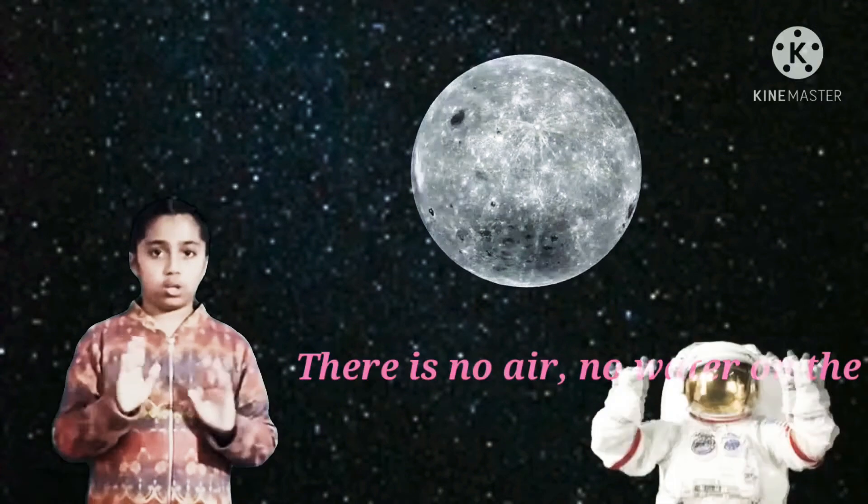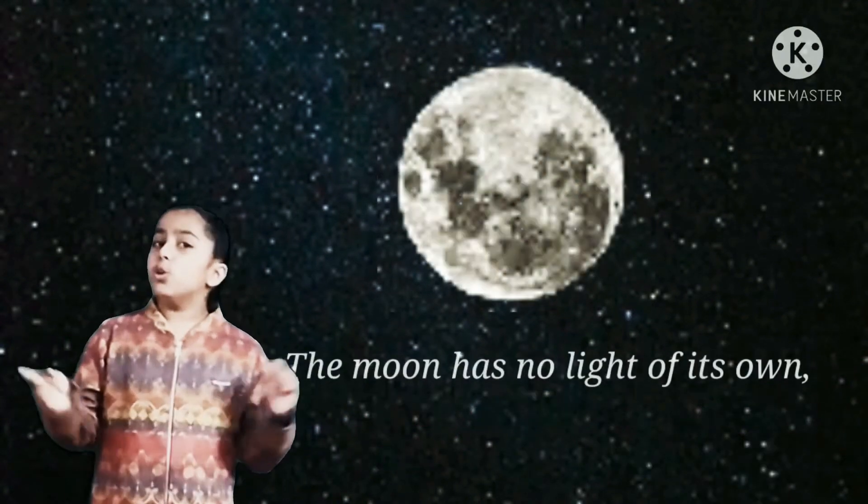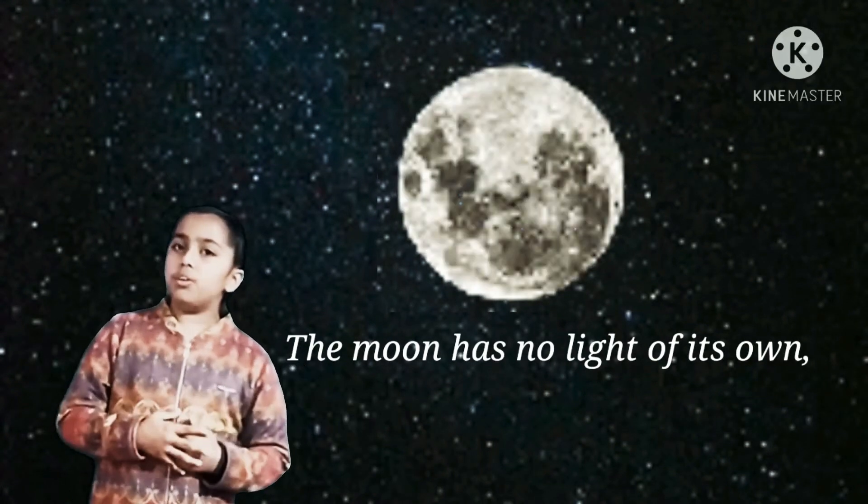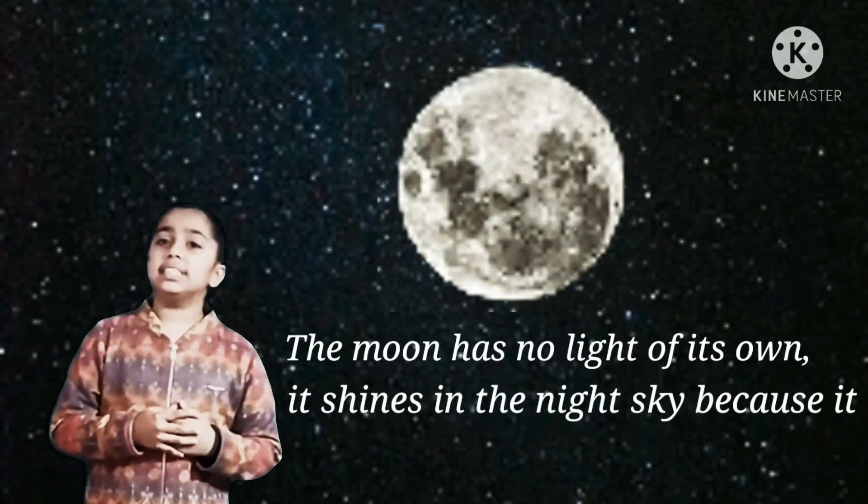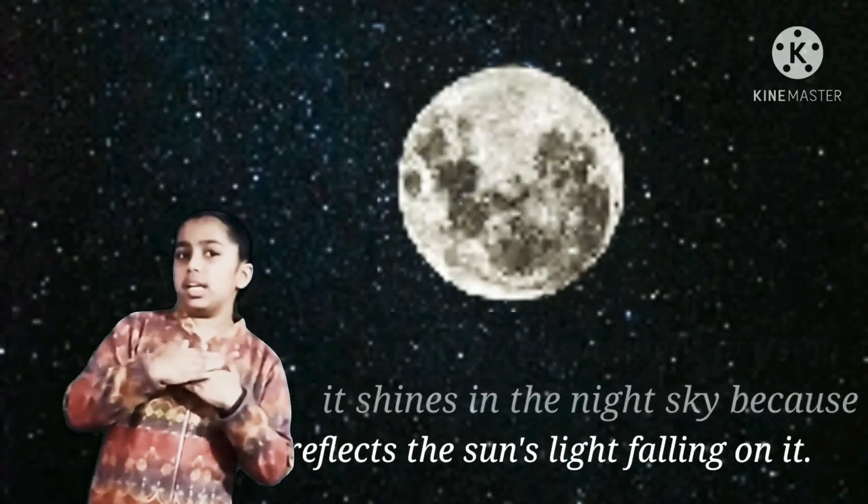There is no air and no water on the moon, so there is no life on the moon. The moon has no light of its own. However, it shines in the night sky because it reflects the sun's light falling on it.